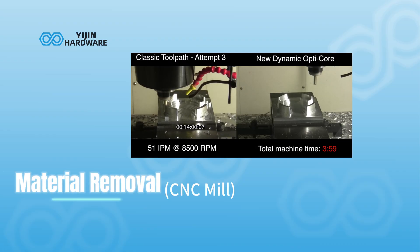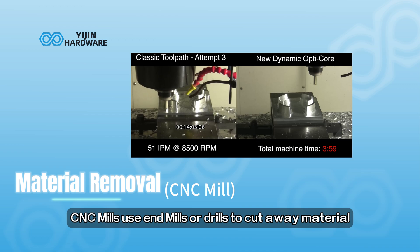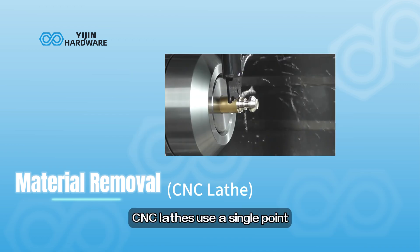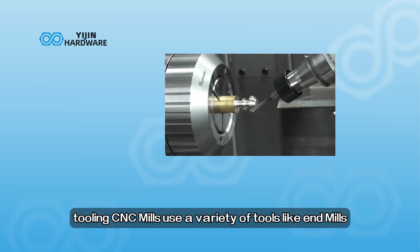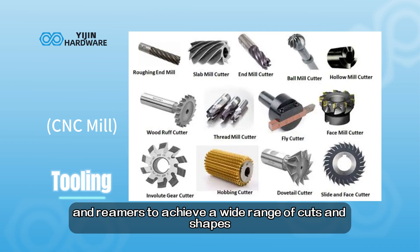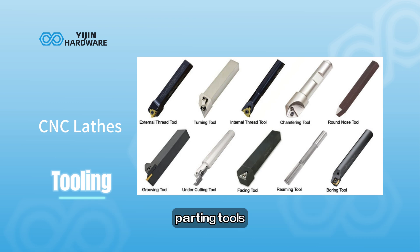Material Removal. CNC mills use end mills or drills to cut away material, allowing for intricate designs, profiles, and depths. CNC lathes use a single-point cutting tool or inserts to remove material from the rotating workpiece. Tooling: CNC mills use a variety of tools like end mills, drills, face mills, and reamers to achieve a wide range of cuts and shapes. CNC lathes typically use turning tools such as parting tools, boring bars, and knurling tools.